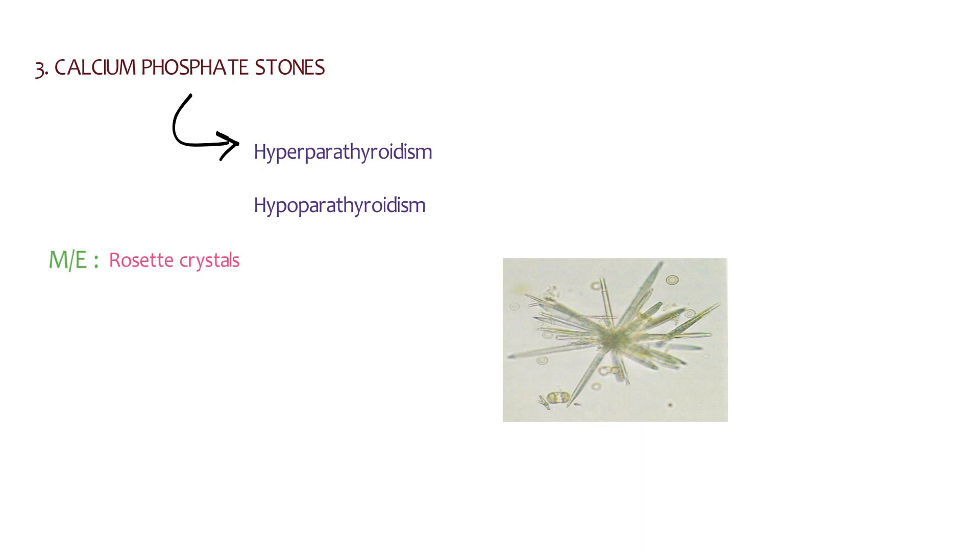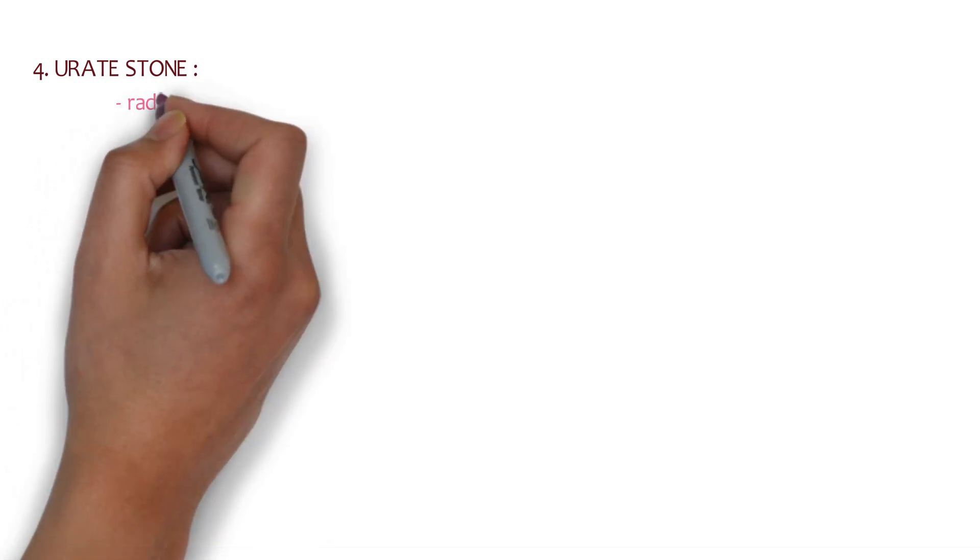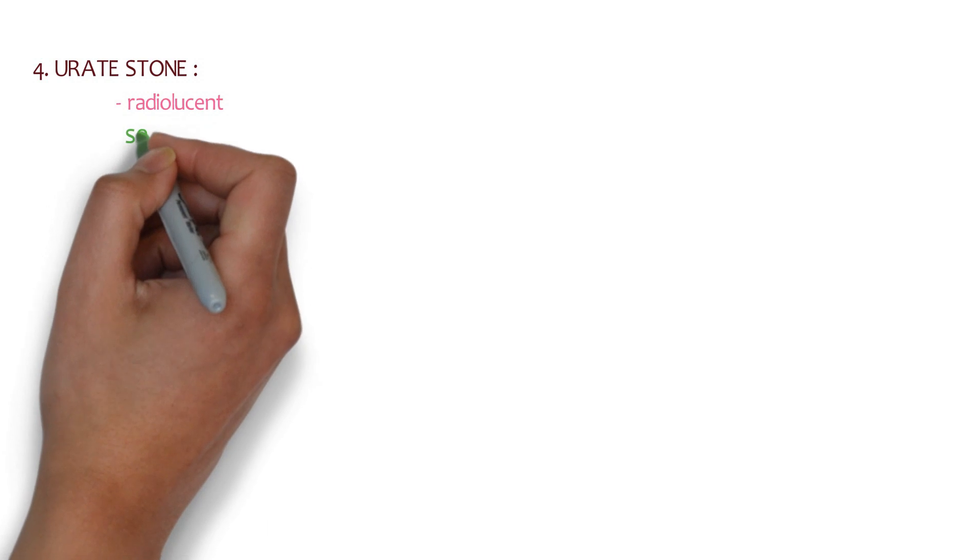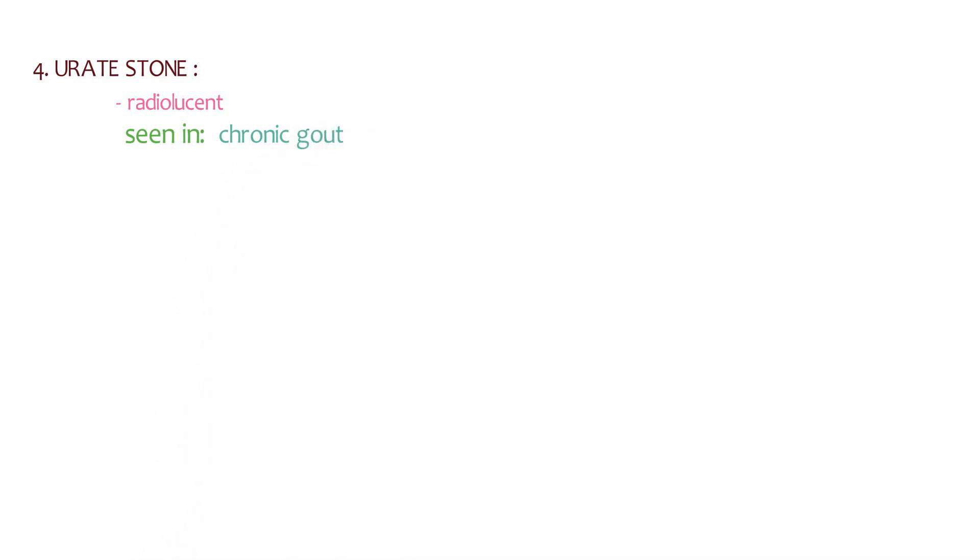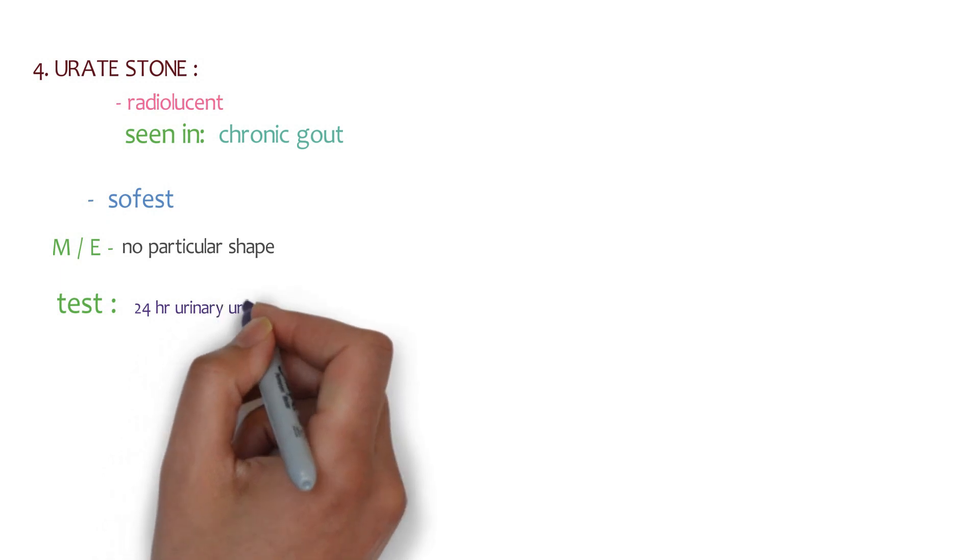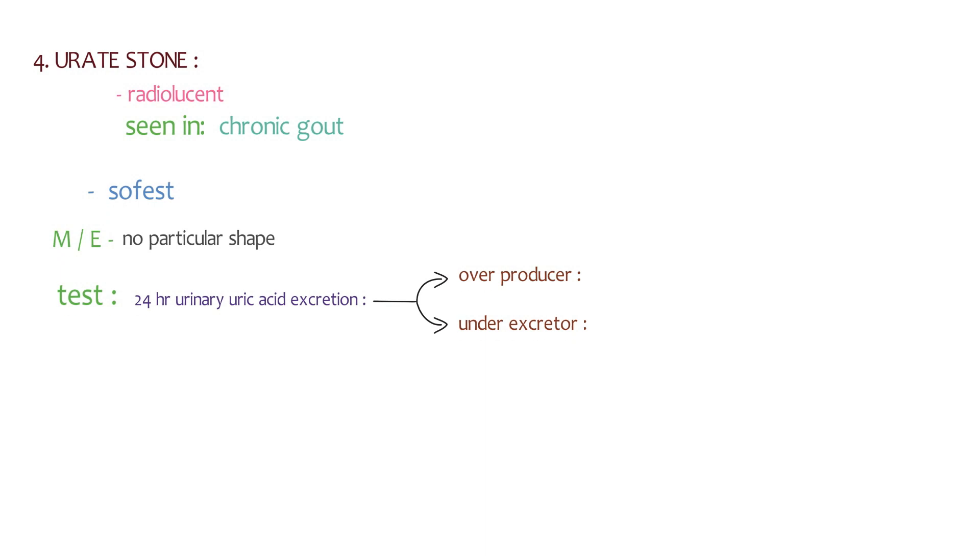The fourth one is urate stone, and these urate stones are very specific because these stones are radiolucent. These stones are generally seen in chronic gout, and note that it is one of the softest kidney stones. This stone is radiolucent - radiolucent means transparent to the X-ray. So these stones are radiolucent. In microscopic examination, there is no particular shape of these crystals, but we have tests to identify the stones. Generally it is seen in chronic gout, so we have a 24-hour urinary uric acid excretion test. The patient might be an over-producer of urinary uric acid or an under-excretor, so we are going to treat accordingly.